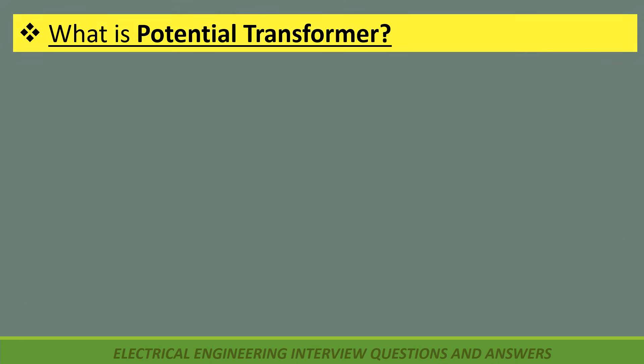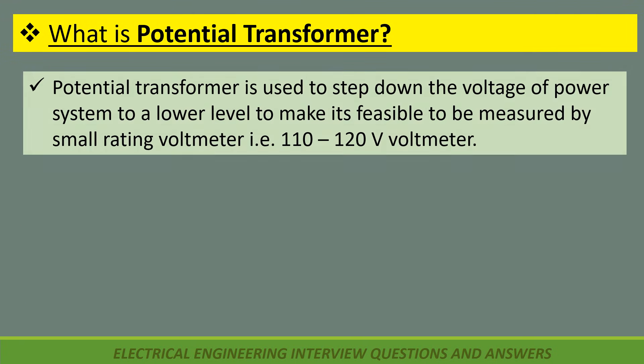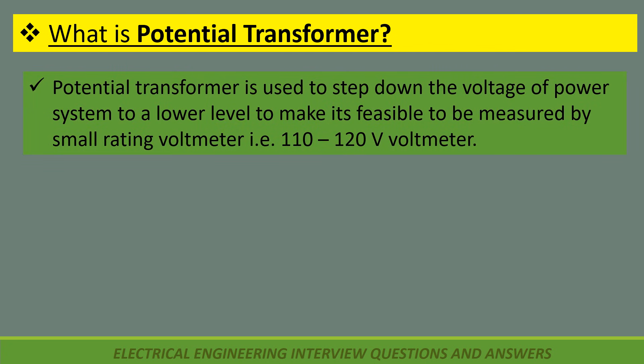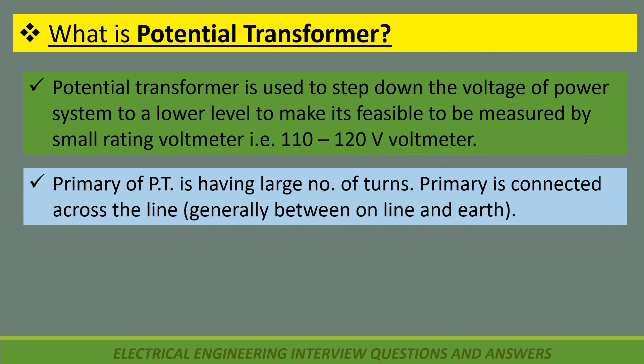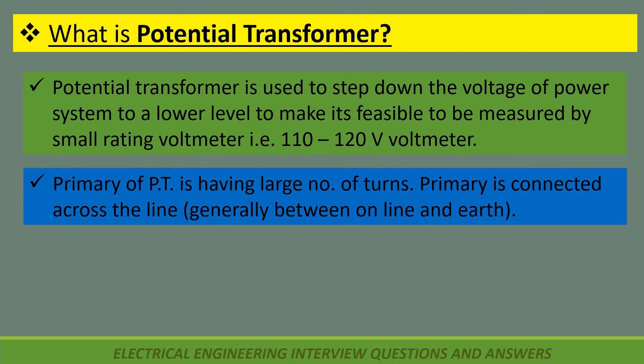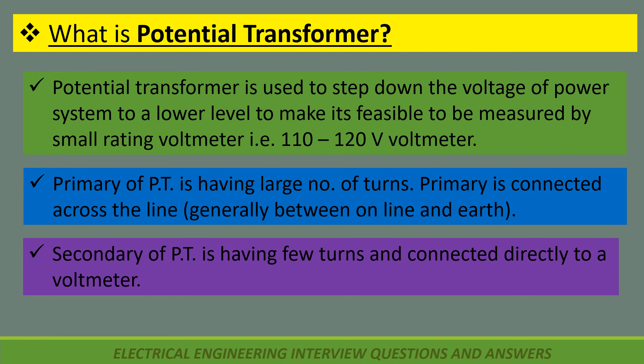What is potential transformer? A potential transformer is used to step down the voltage of a power system to a lower level to make it feasible to be measured by a small rating voltmeter — that is, a 110–120 volt voltmeter. Primary of PT has a large number of turns and is connected across the line, generally between one line and earth. Secondary of PT has few turns and is connected directly to a voltmeter.